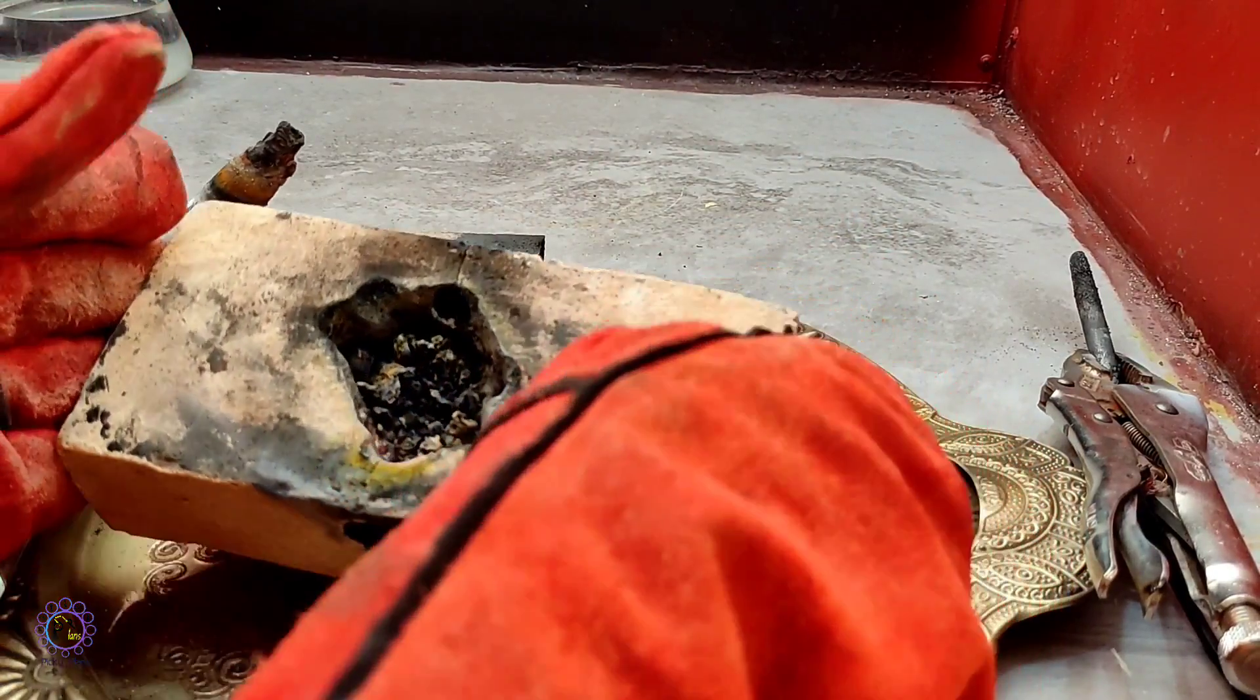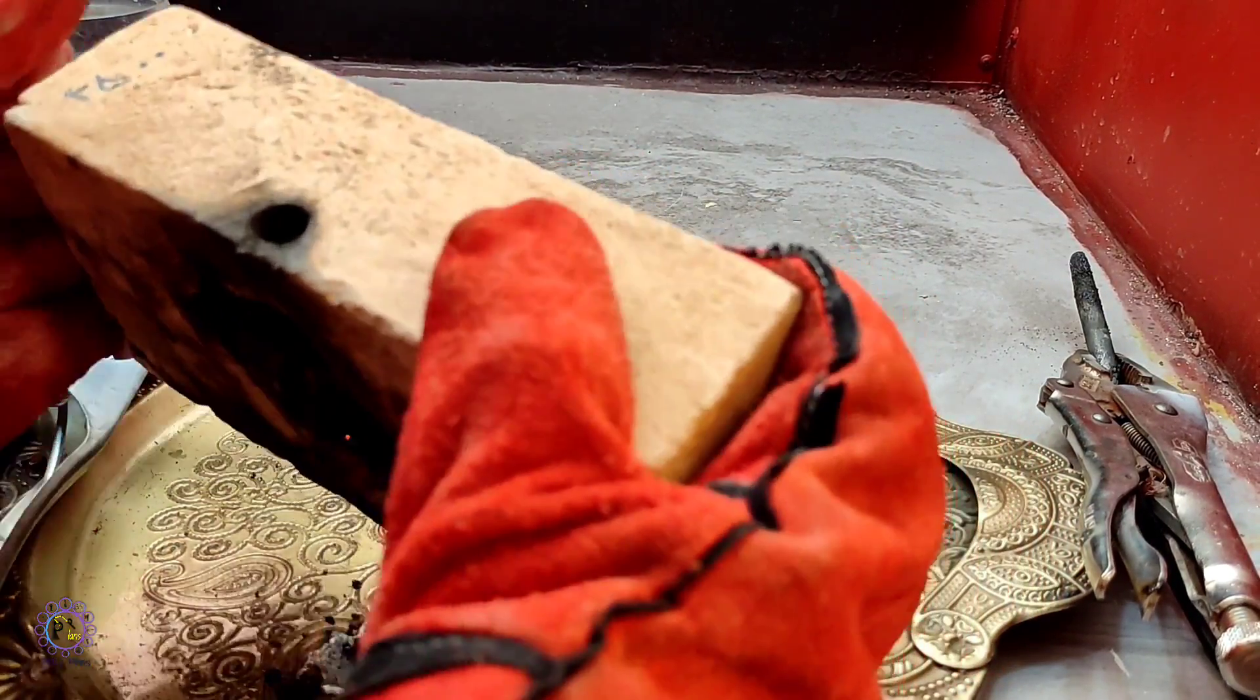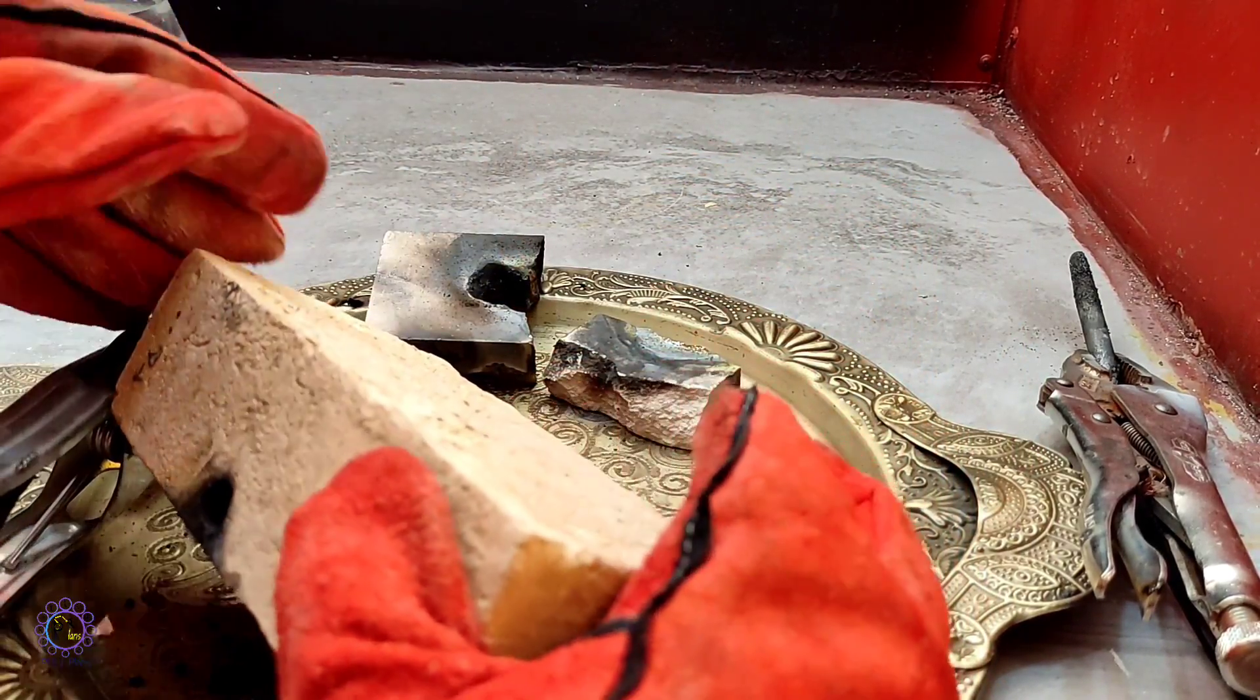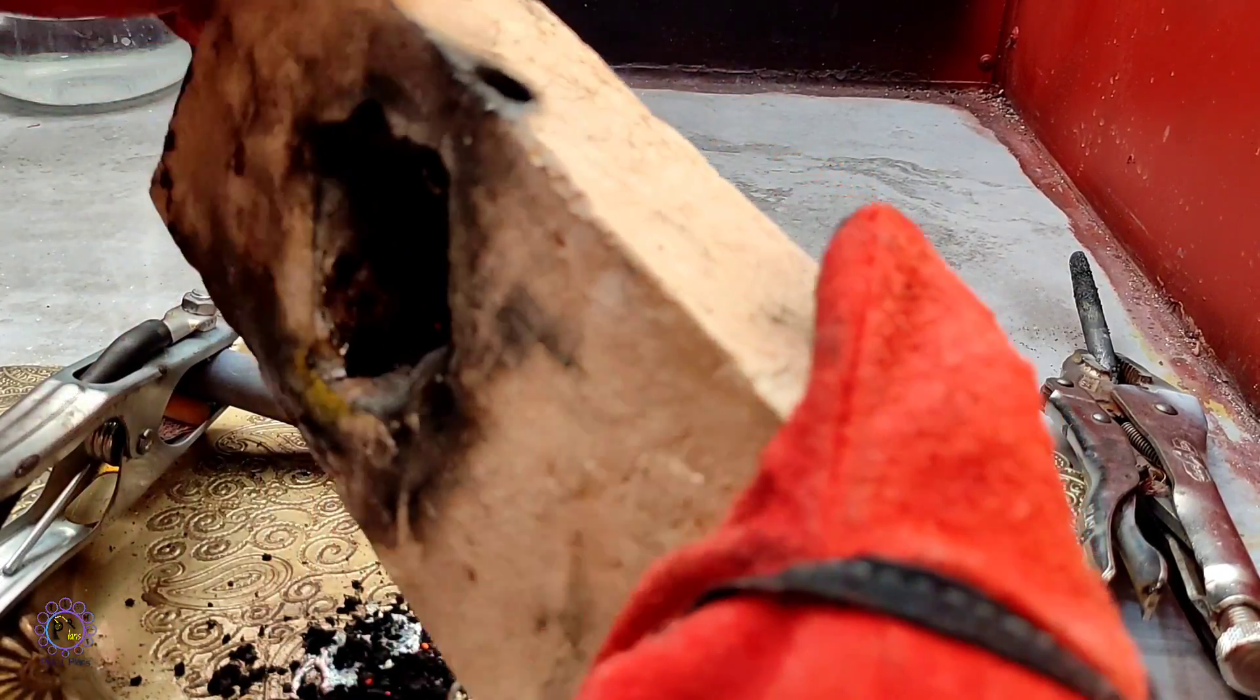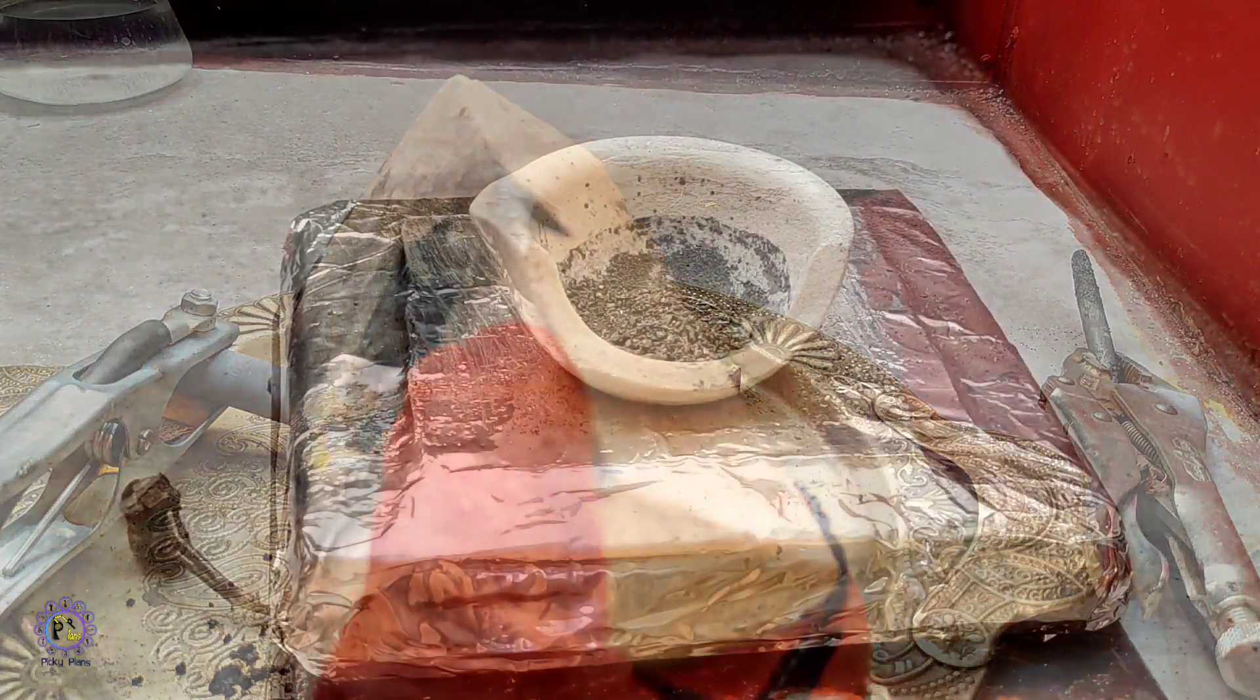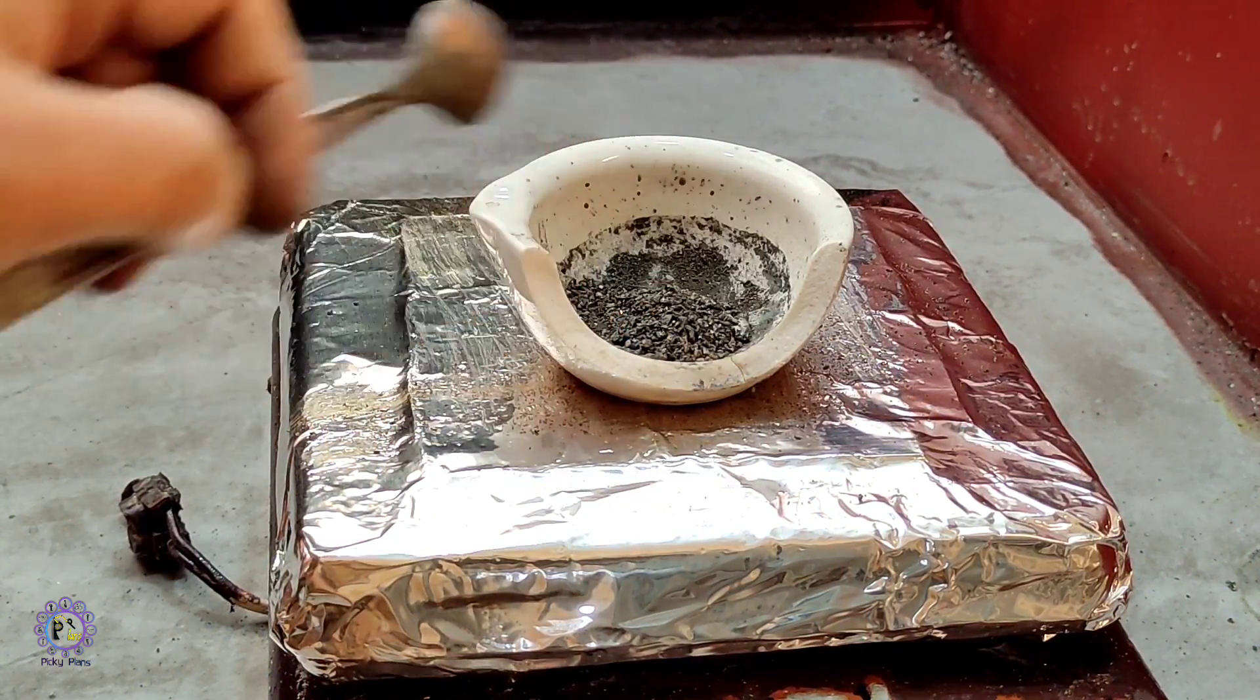And eventually molten lead poured into the tray. Afterward, to clean lead from dirt, it's been remelted.